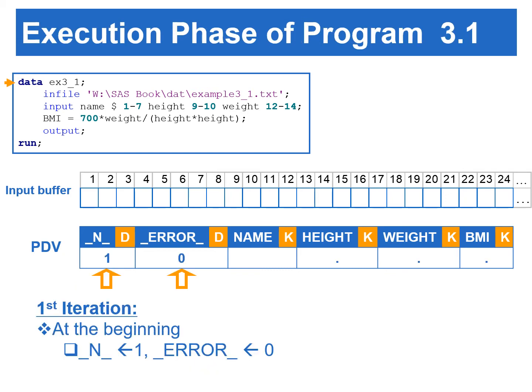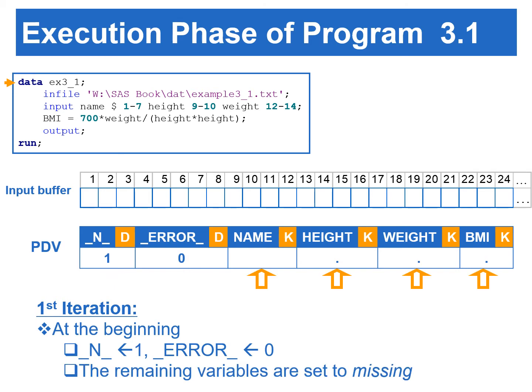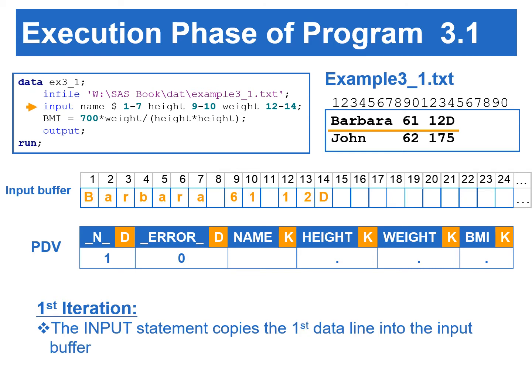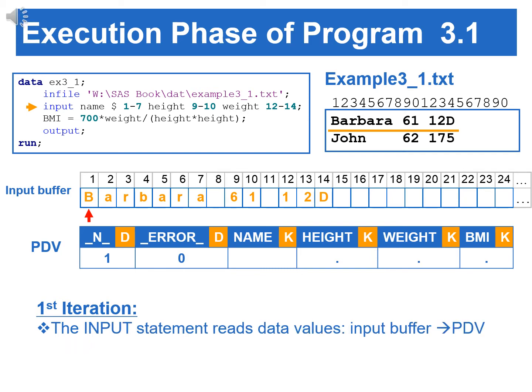Once the compilation phase is completed and if there are no syntax errors, SAS starts with the execution phase. At the beginning of the execution phase, the automatic variable _N_ is initialized to 1, and _ERROR_ is initialized to 0 since there is no data error. The non-automatic variables are set to missing. Next, the INFILE statement identifies the location of the input file. The INPUT statement copies the first data line into the input buffer, and the input pointer points to the beginning of the input buffer. Then the INPUT statement reads data values from the record in the input buffer and writes them to the PDV.